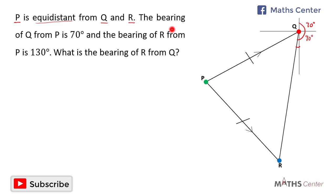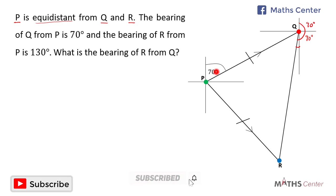The bearing of KL from P is 70 degrees, meaning the angle from north to the direction of KL is 70 degrees. We know that from north to east is 90 degrees, so if the angle here is 70 degrees, the remaining angle will be 90 degrees minus 70 degrees, which gives us 20 degrees.